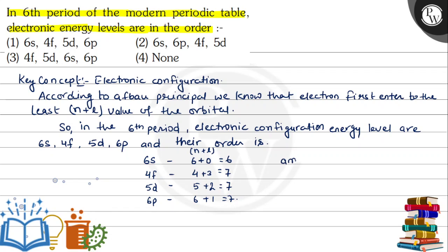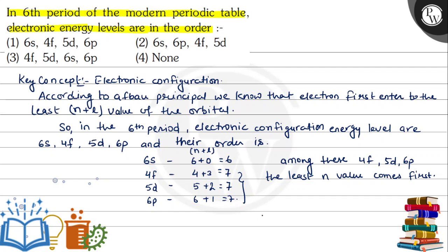Among these, 4f, 5d, and 6p all have the same n plus l value of 7. When n plus l values are equal, the orbital with the least n value comes first. So the order among them is 4f first, then 5d, then 6p, since n values are 4, 5, and 6 respectively.